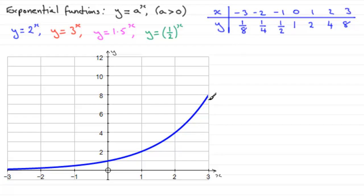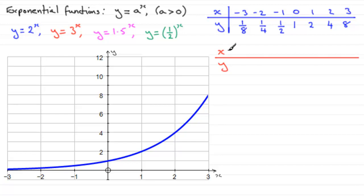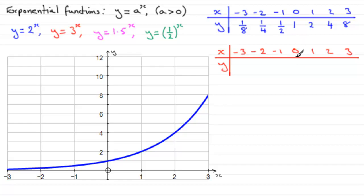Now let's look at y equals 3 to the power x. We set up a table with x and y, drawing values from minus 3 to 3. You might want to pause and think about what this looks like. Remember, anything to the power zero is 1, so 3 to the power 0 is 1.